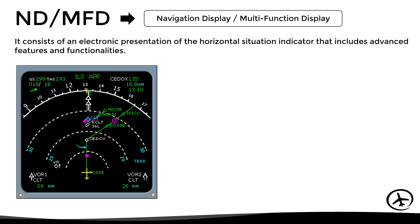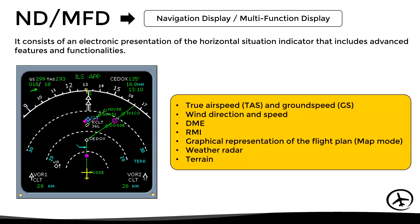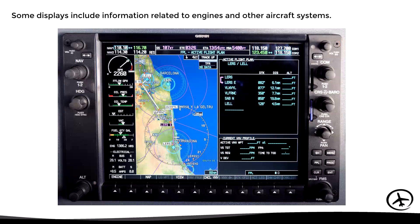Finally, we have the MFD, which stands for Multi-Function Display. Depending on the manufacturer, it may also be called Navigation Display, abbreviated as ND. It consists of an electronic presentation of the horizontal situation indicator that includes advanced features and functionalities related to navigation, such as true airspeed and ground speed indication, wind direction and speed, DME, RMI, a graphical representation of the flight plan, weather radar, and terrain. Some of these displays even include information related to the engines and other aircraft systems, as seen in this example with the Garmin G1000 system, which is common on smaller aircraft without dedicated engine and systems monitoring displays.